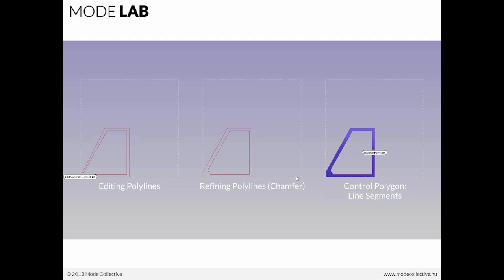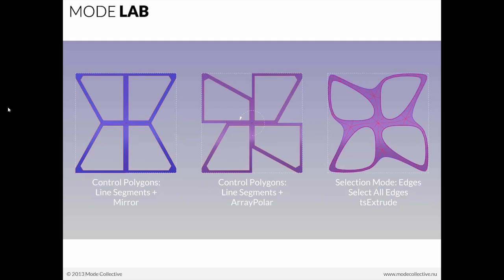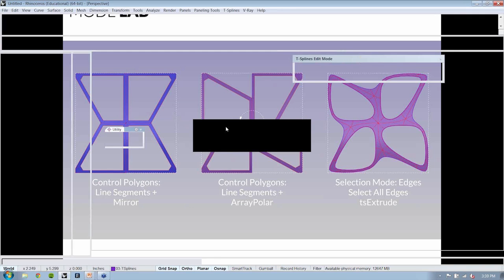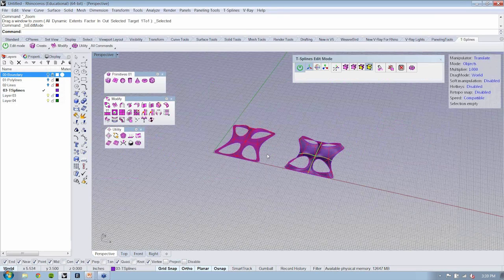With the simple transformation that we did with mirror, you can see it was pretty easy to create this element. But what if you wanted to do something like a polar array, which adds another level of sophistication to the form? Well, it's as easy as just keeping an eye on what's happening at these junctures.